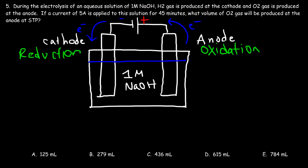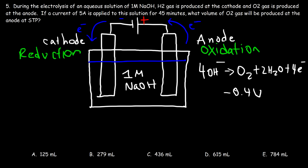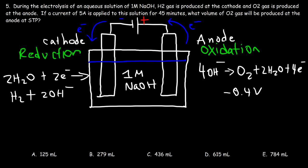For the half reactions under basic conditions: at the anode, hydroxide is oxidized to oxygen gas and water, releasing 4 electrons per oxygen molecule (cell potential −0.40 V). At the cathode, water acquires 2 electrons to produce hydrogen gas plus hydroxide. So hydrogen gas is produced at the cathode and oxygen gas at the anode. Our goal is to calculate the volume of oxygen gas produced at STP.